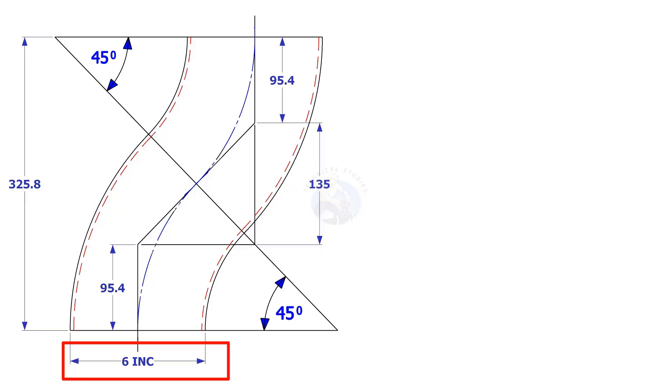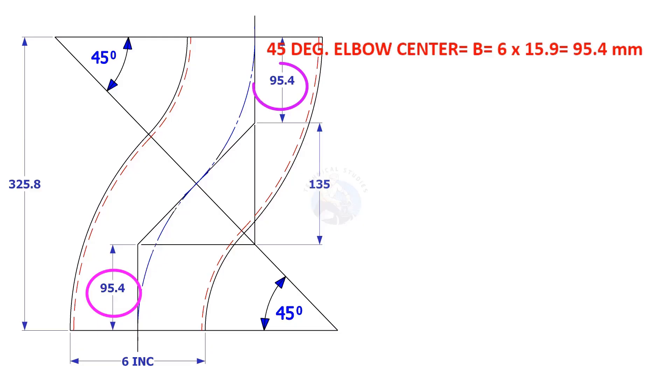In another example, the size of the elbow is 6 inch. 6 inch 45-degree elbow center is 6 multiplied by 15.9, which is 95.4 millimeters.